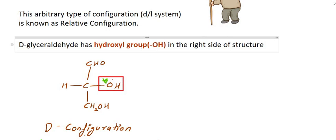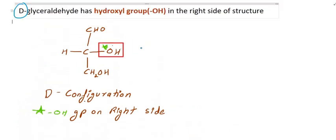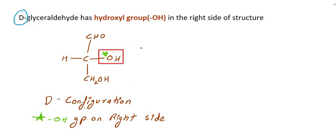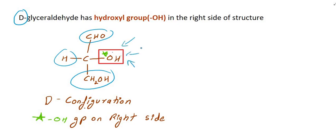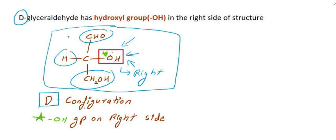Now, we will compare the relative configuration using glyceraldehyde. Glyceraldehyde exists in two forms: D and L. The structure of glyceraldehyde is CHO, OH, and CH2OH. Because OH is on the right side, we will name this the D configuration.